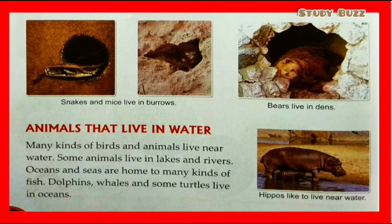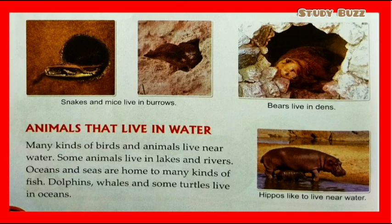Many kinds of birds and animals live near water. Some animals live in lakes and rivers. Oceans and seas are home to many kinds of fish, dolphins, and whales. Some turtles live in oceans. Hippos like to live near water. Bears live in dens, and snakes and mice live in burrows.